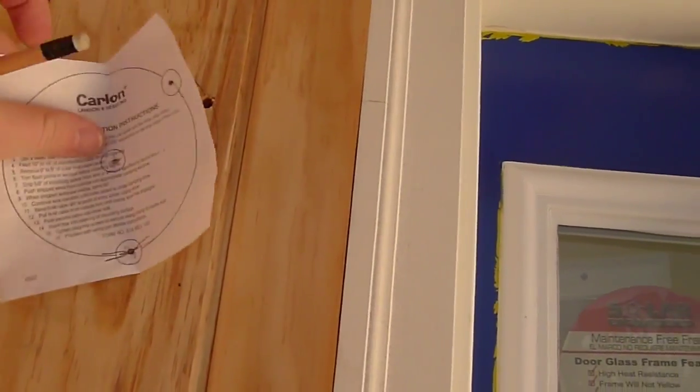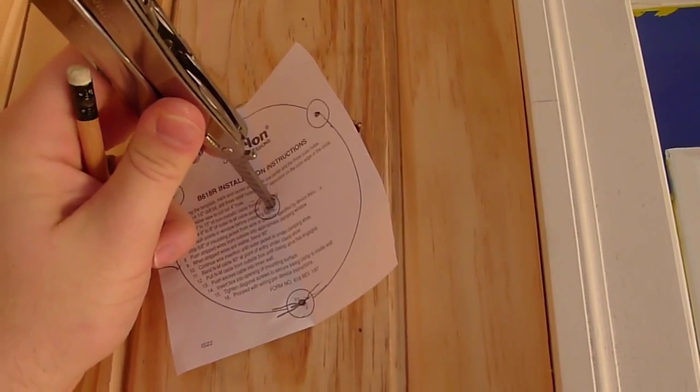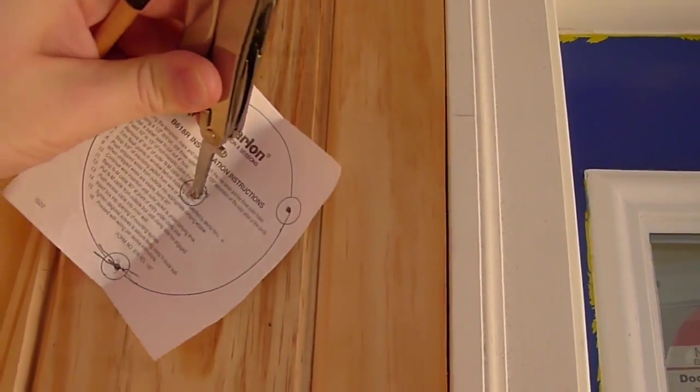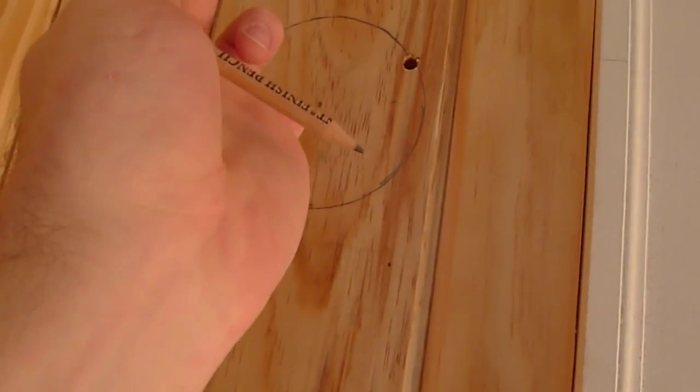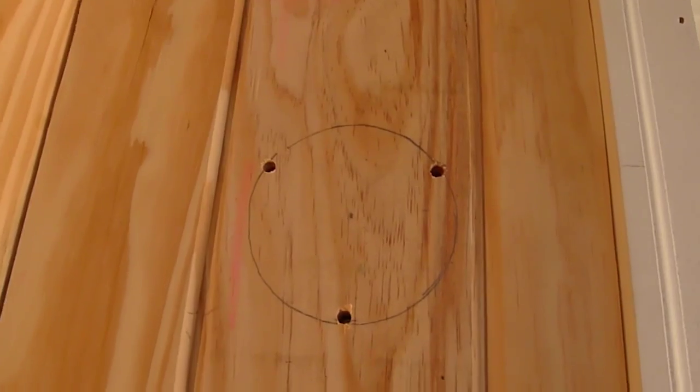Now I also went ahead and got my Swiss tool and got the Phillips screwdriver part of it and I held that in place while I spun this around with the pencil in one of the holes so I could actually draw the circle and have something to follow with the jigsaw.